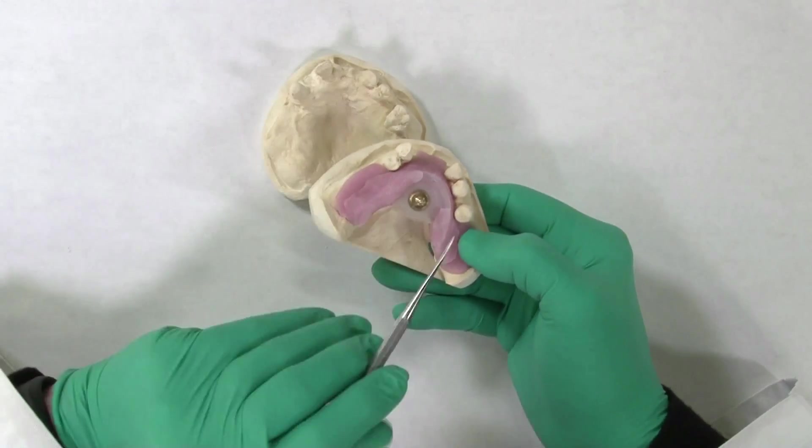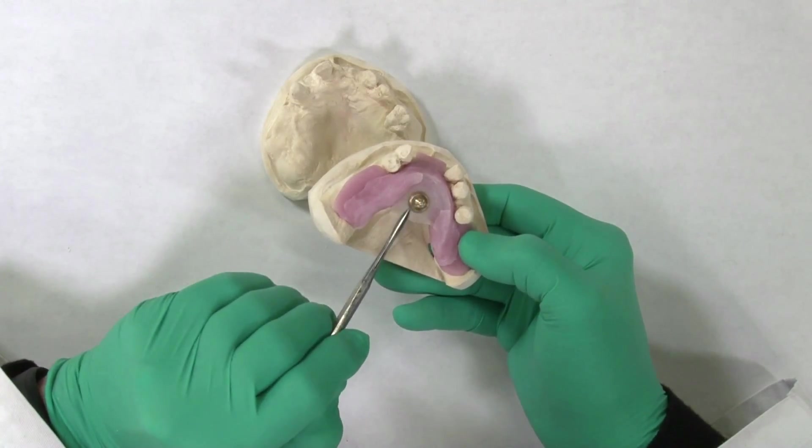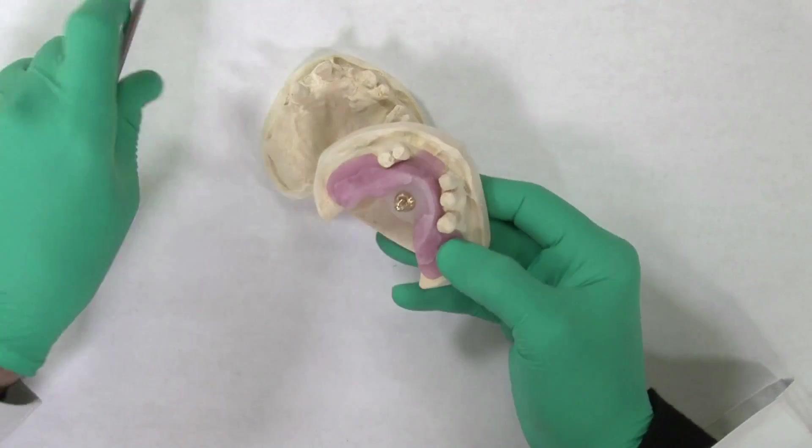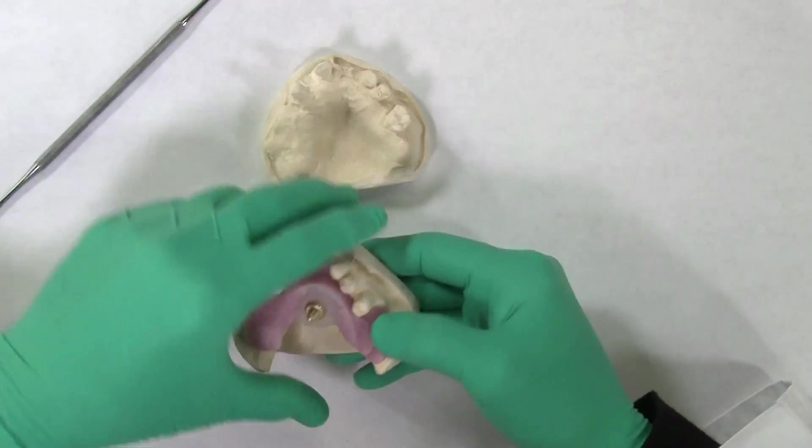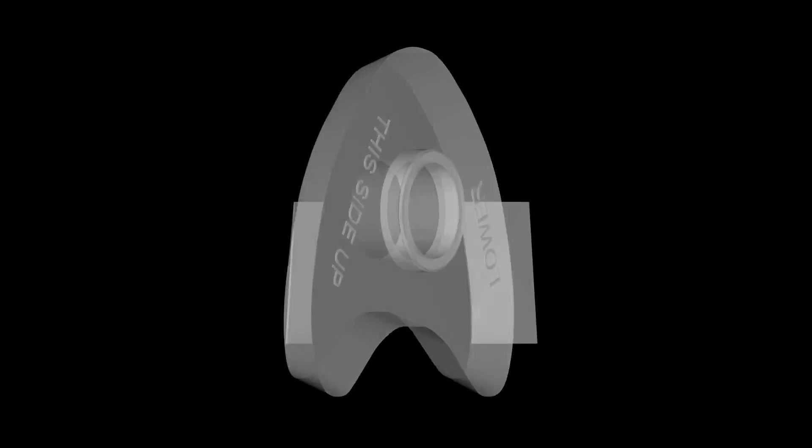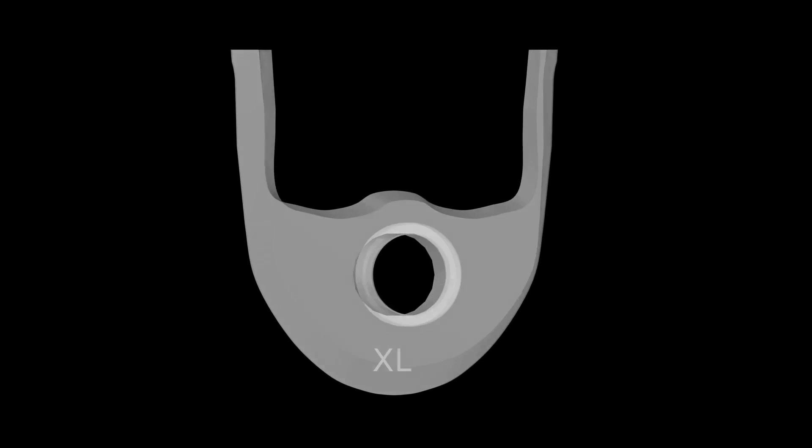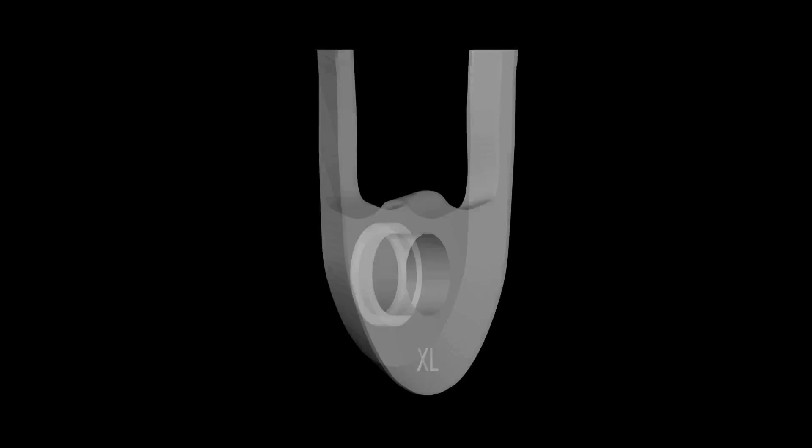A pin receiver is placed on the lower base plate, slightly below the occlusal plane. In a dentate or partially dentate case, it is necessary to utilize either the small pin receiver or one of the modified pin receivers to avoid the teeth when mounting.